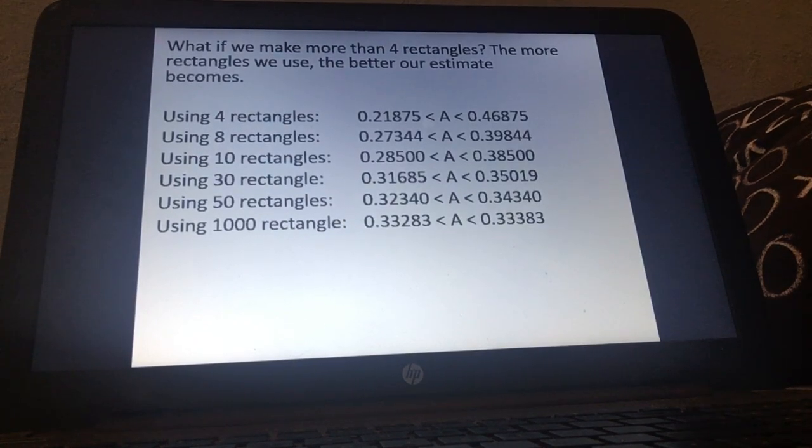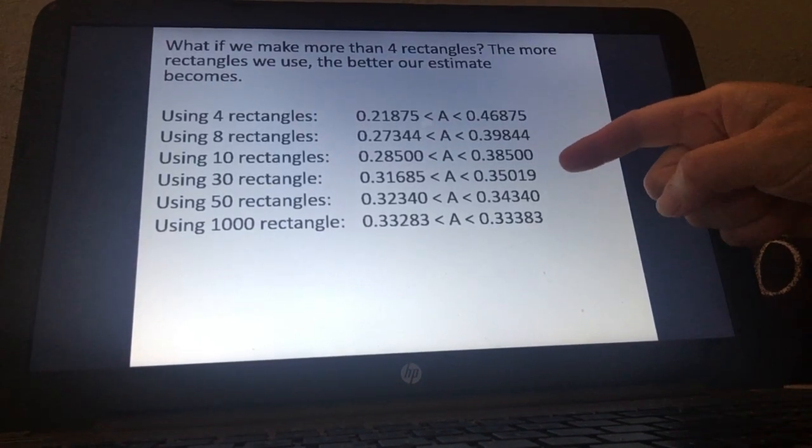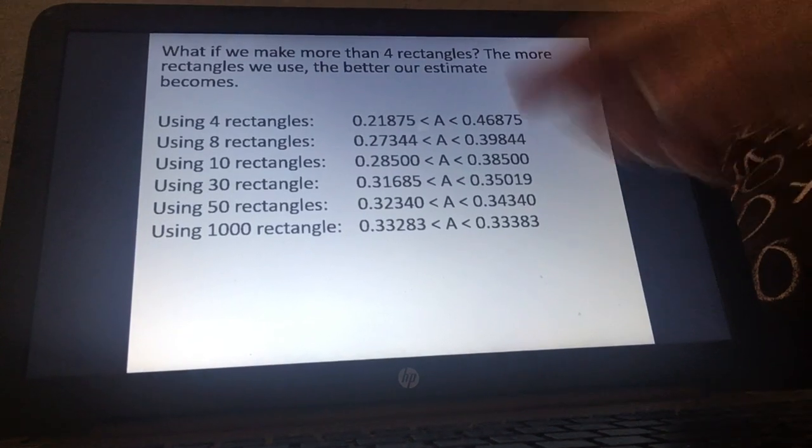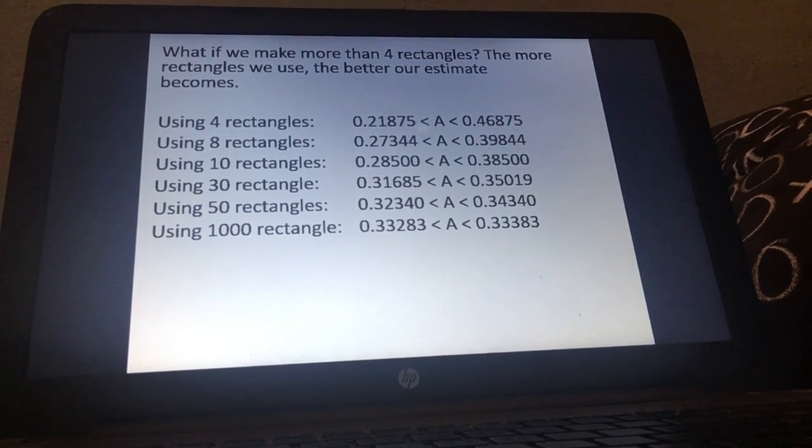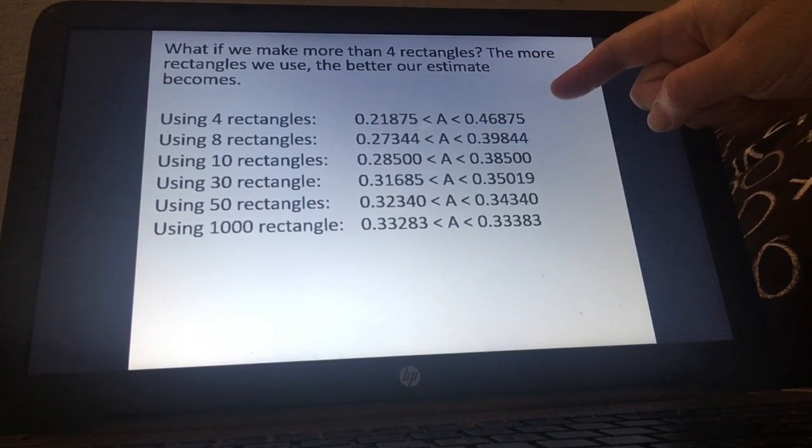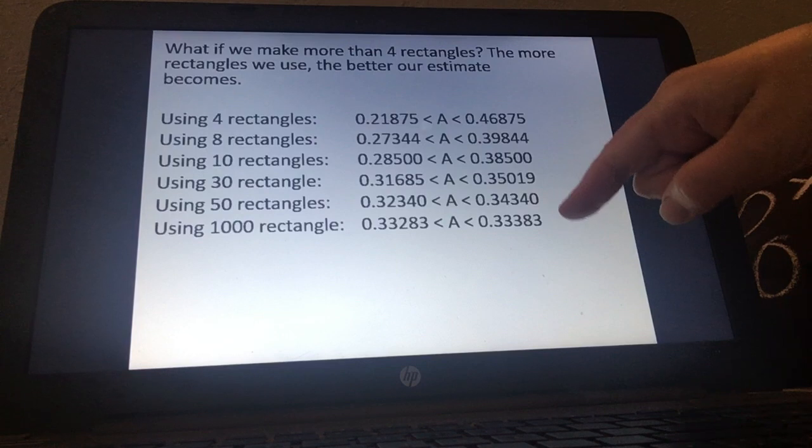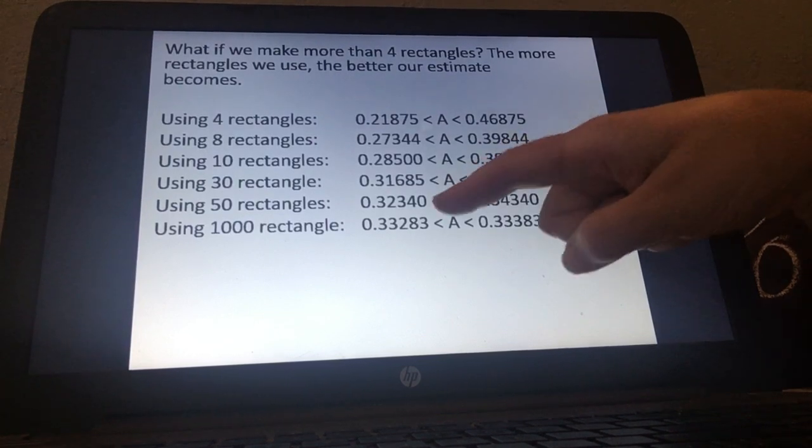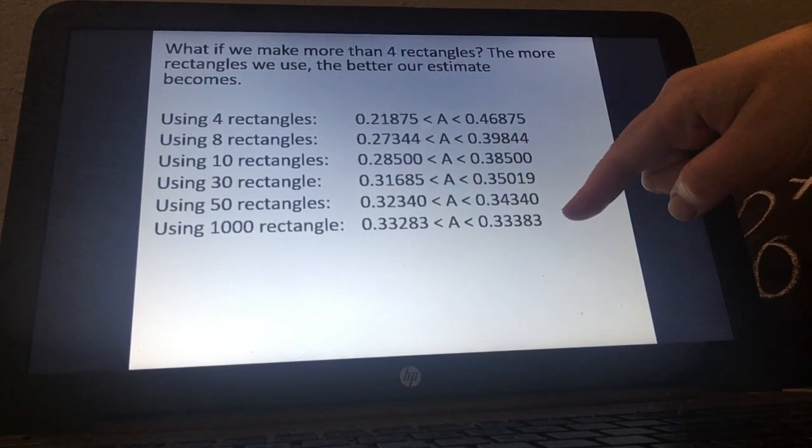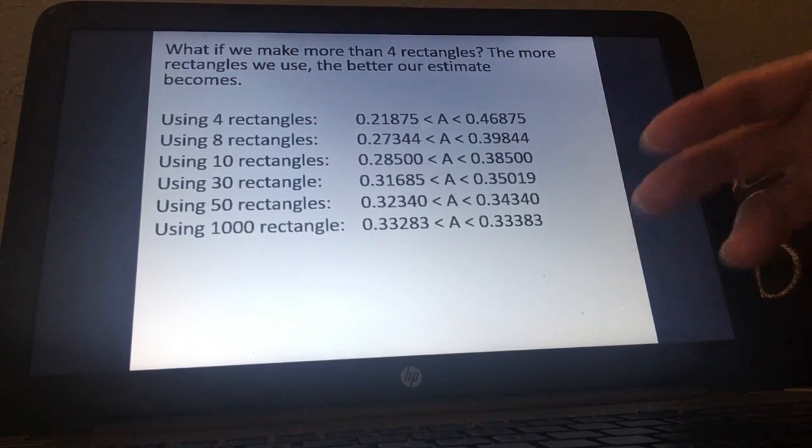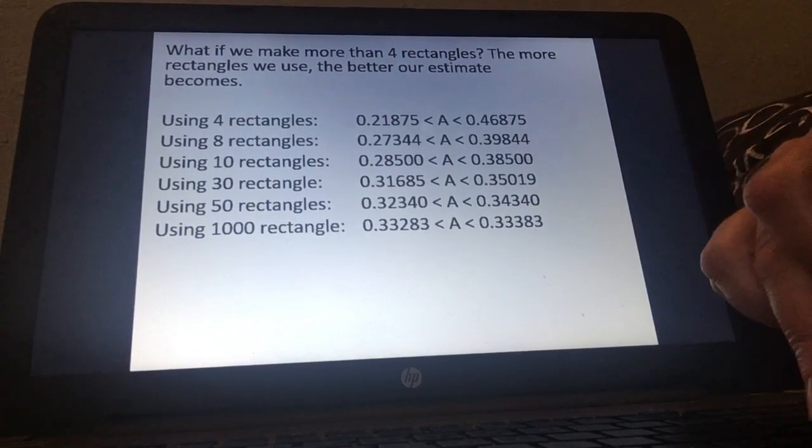Now that's if we divided that space underneath into four rectangles. But what if we divide it into 8, 10, 30, 50, 1,000? You can see the more rectangles we use the closer we're going to get to the actual area. When we just use four rectangles our area was somewhere between 0.21875 and 0.46875. But look if we the more rectangles we use look at the closer and closer these numbers come. Well if we used a thousand it's between 0.33285 and 0.33383. So you get the idea to get a better approximation. The more rectangles you use the better you'll be or closer you'll be to the actual area.